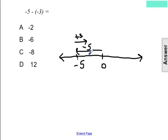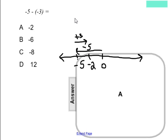From negative 5, this would bring us back only to negative 2, making negative 5 minus negative 3 equal to negative 2.